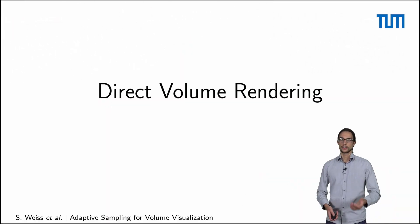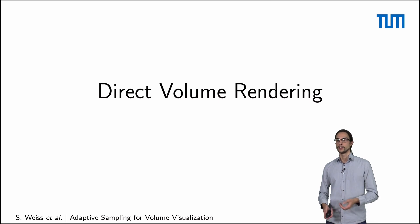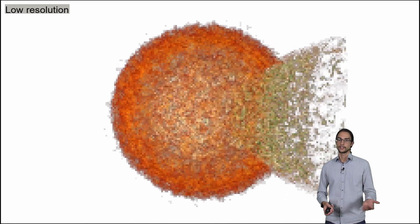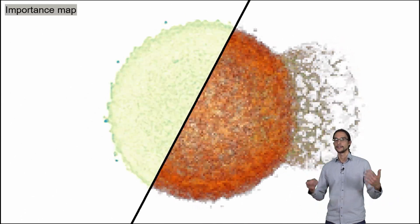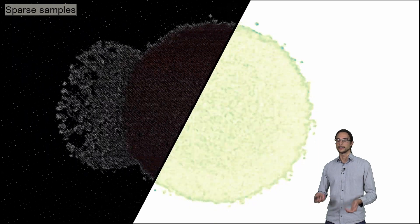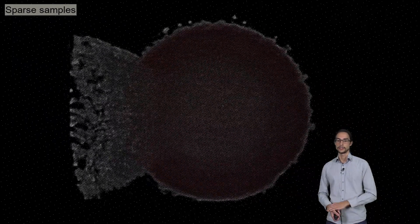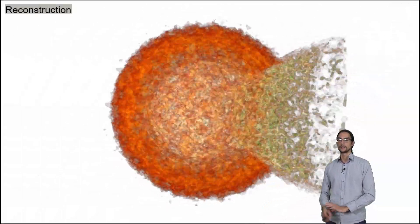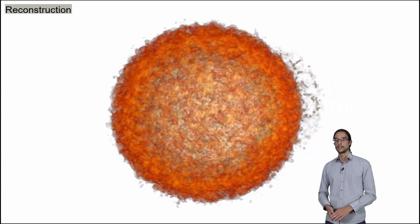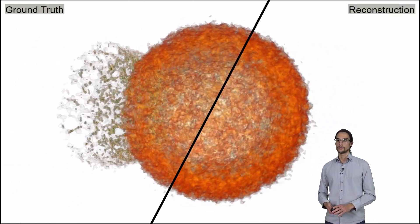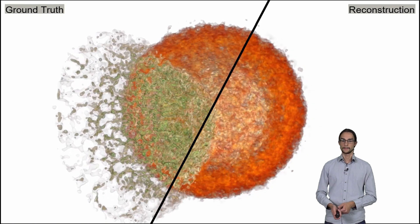We can also apply the same pipeline for direct volume rendering. Now the renderer doesn't render an isosurface but instead renders volume rendering with color, and the reconstruction network also predicts colors. Here you can see that the reconstruction fairly well matches the ground truth, even for this complex scene.